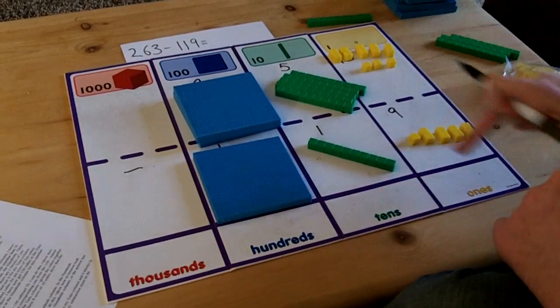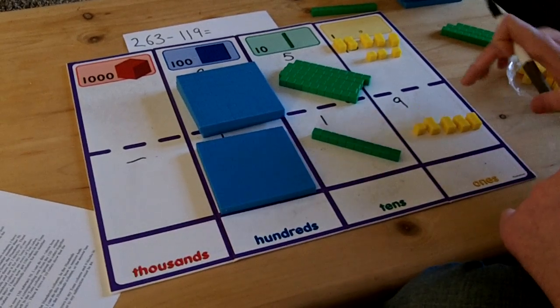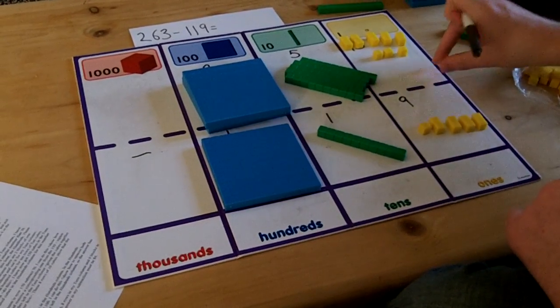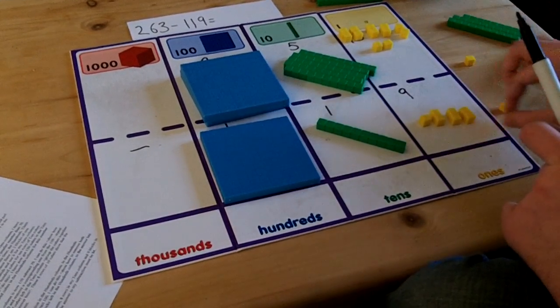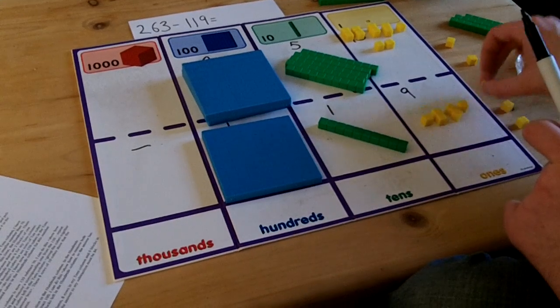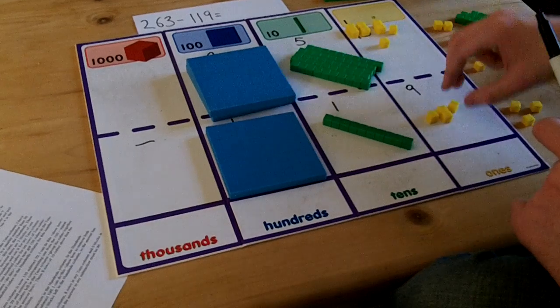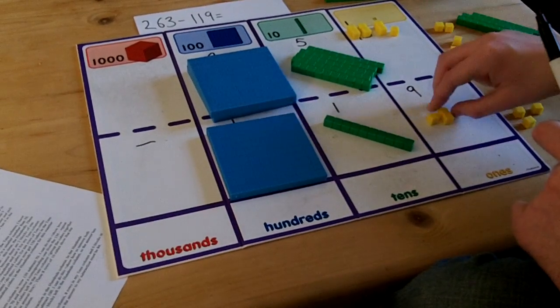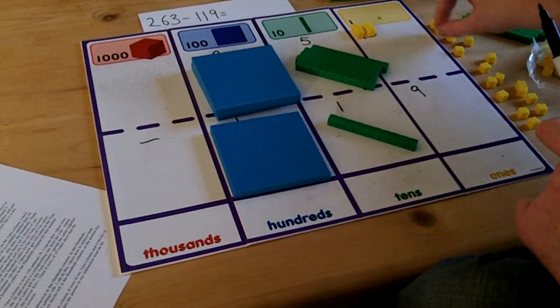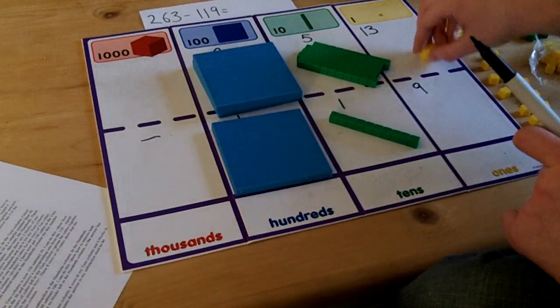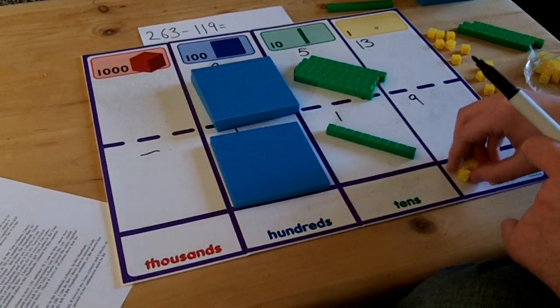The subtraction in the ones column is now 13 subtract 9. So to solve this I'm going to take one from each of these sections. One, two, three, four, five, six, seven, eight, nine. I have now got four ones left over. So 13 subtract 9 must equal 4.